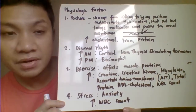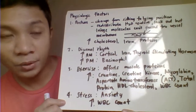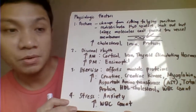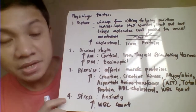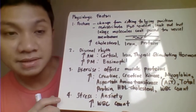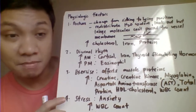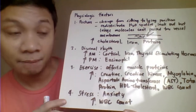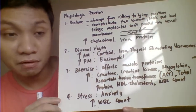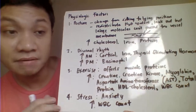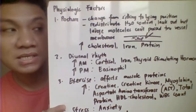Stress or anxiety would tend to increase WBC count. This includes excessive crying, especially for children. When blood is drawn from a crying child, expect to have a high WBC count because of that excessive crying or stress related to the patient.